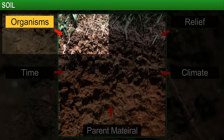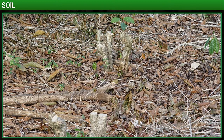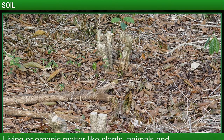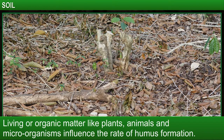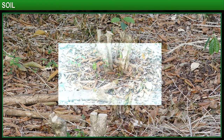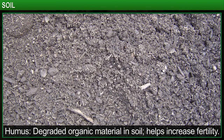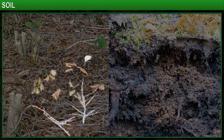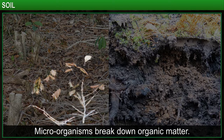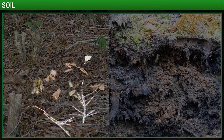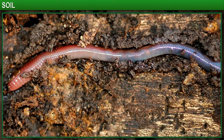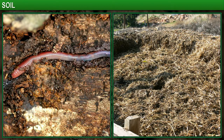Living or organic matter influences the rate of humus formation. Humus is the degraded organic material in soil and helps increase its fertility. Dead plants fall on the surface of the soil and decay. The process of decomposition is helped by microorganisms that break down the organic matter when they feed on it. Animals such as the earthworm leave their excreta in the soil, which helps to make the humus richer.